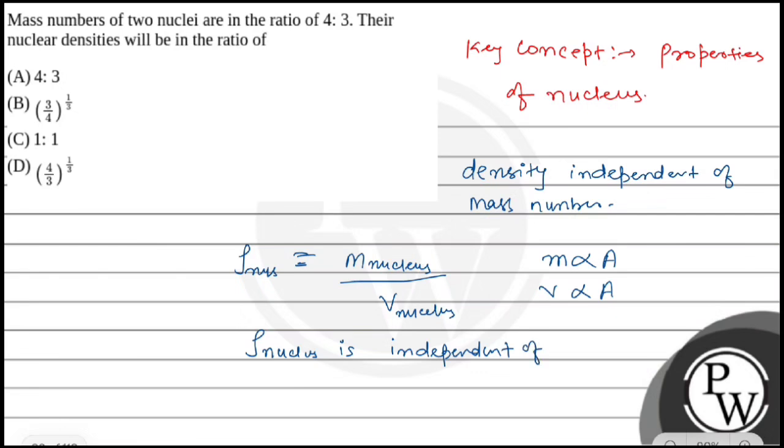So whatever the ratio of the mass number of these nuclei, their densities would be the same.